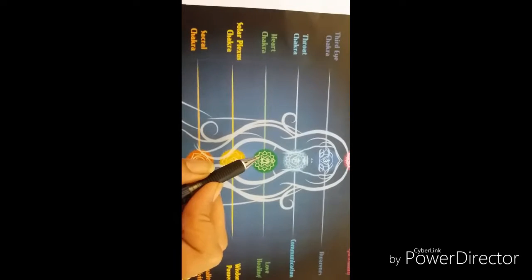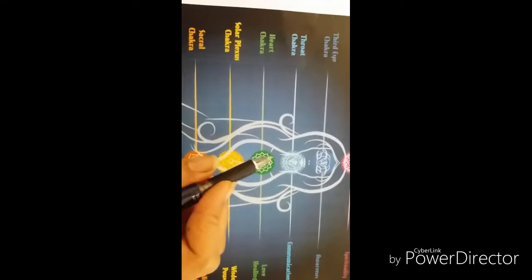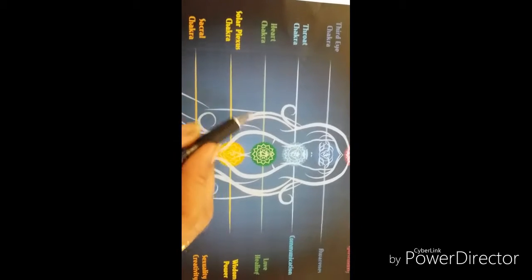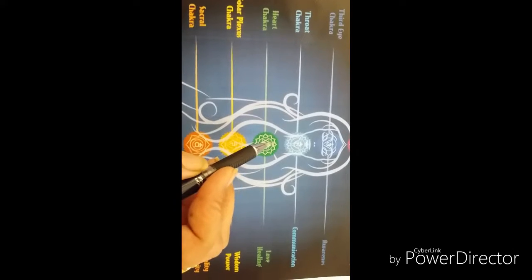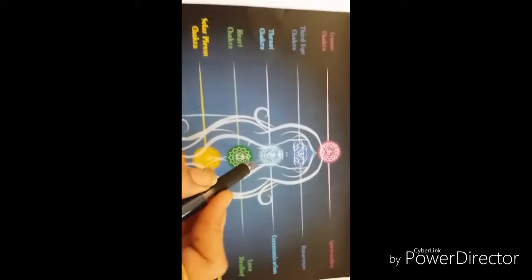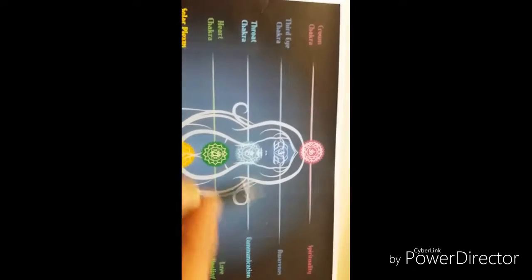Physical associations and physical organs related are our heart, thymus gland, lower lungs, circulatory system, and immune system. Then going to our other chakra, that is the throat chakra. It is related to communication.